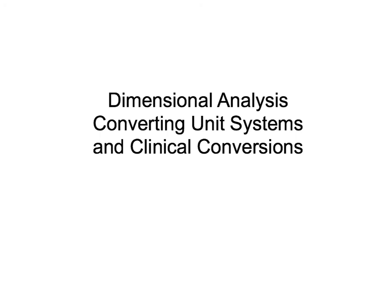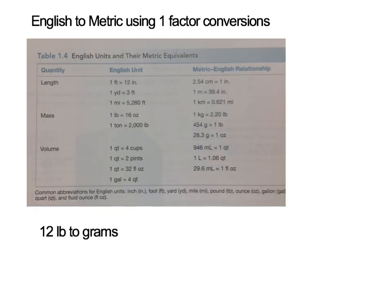In today's video, we're going to look at dimensional analysis in converting between unit systems and to perform calculations that you might see in a clinical setting regarding drug dosages. First, let's talk about dimensional analysis and the conversion factors. To go from English unit systems to the metric unit system, we need to have certain conversion factors. You can see in Table 1.4 from your text that there are several different English-to-metric relationships that we need to know.